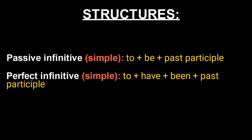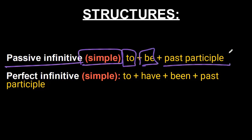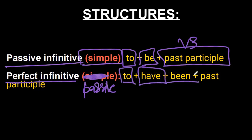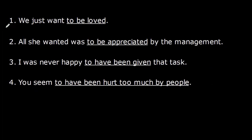Now let's look at the two types of passive infinitives and their structures. First, the simple passive infinitive: 'to + be + past participle (V3).' Second, the perfect passive infinitive: 'to + have + been + past participle (V3).' Let's take some examples and master them.